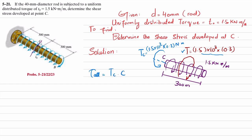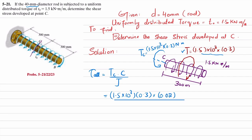Now, the shear stress formula is τ = T·c / J. The torque at point C is 1.5 × 10³ × 0.3. The diameter is 40 millimeters, so the radius c equals 20 millimeters, which is 0.02 meters. J equals π/2 · c⁴, where c is 0.02 meters.